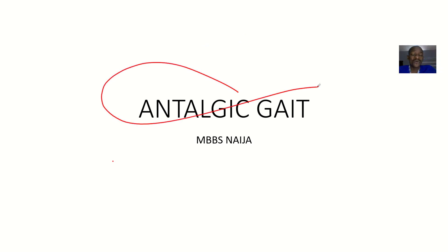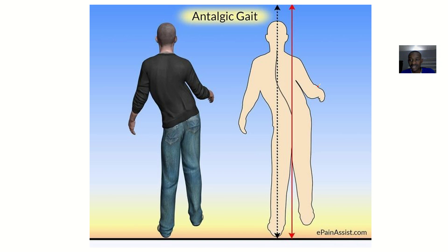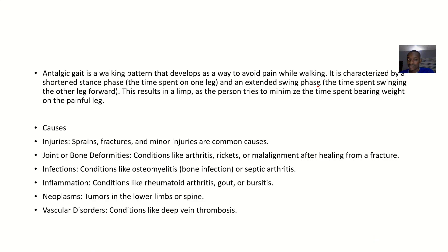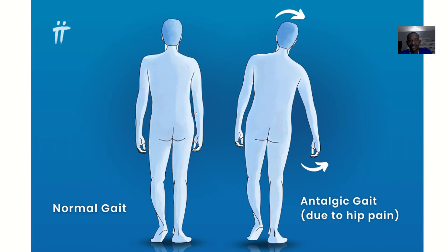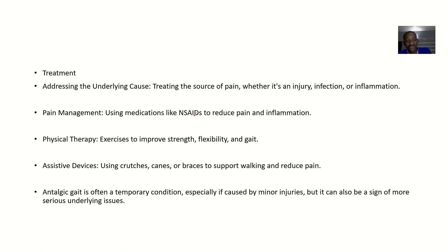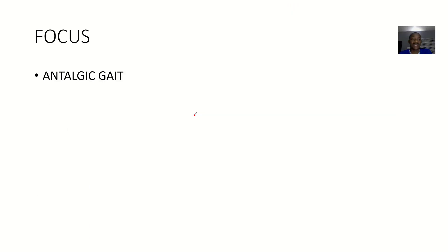The next type of gait we're looking at is the antalgic gait. We're going to talk about this gait from the definition, we'll talk about the causes, we'll talk about the characteristics, we'll talk about the diagnosis, and we'll talk about the possible treatment for this antalgic gait.